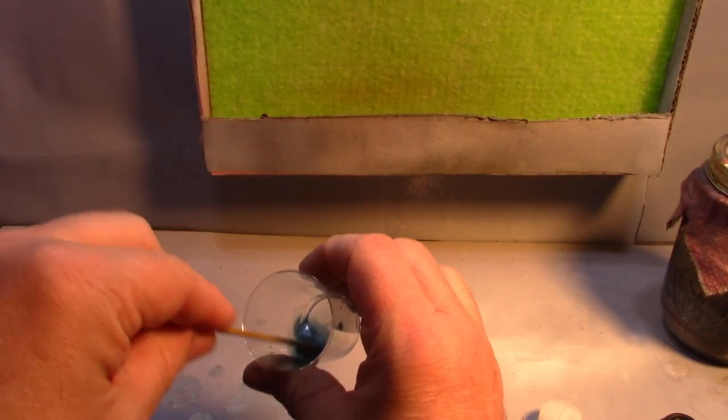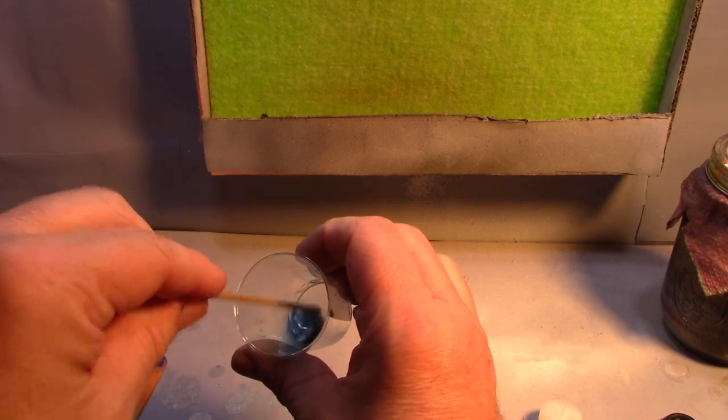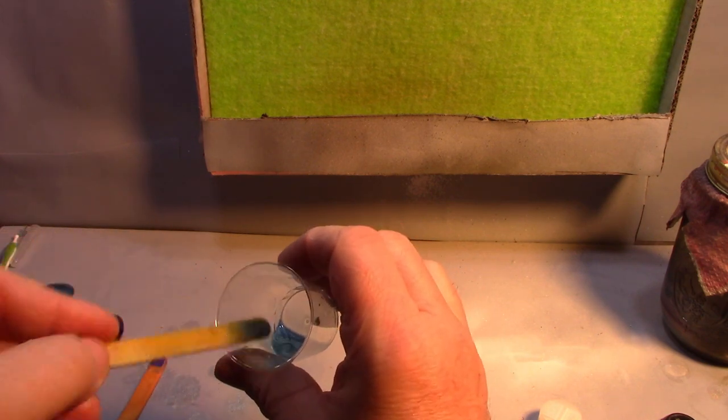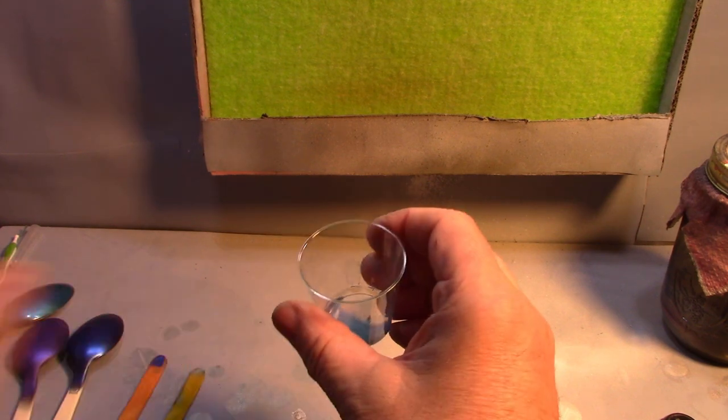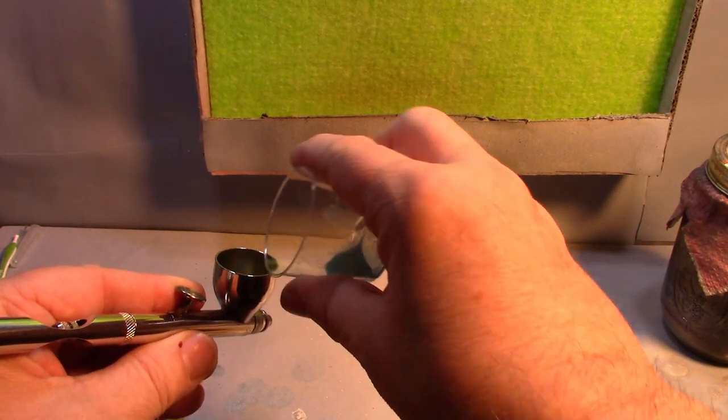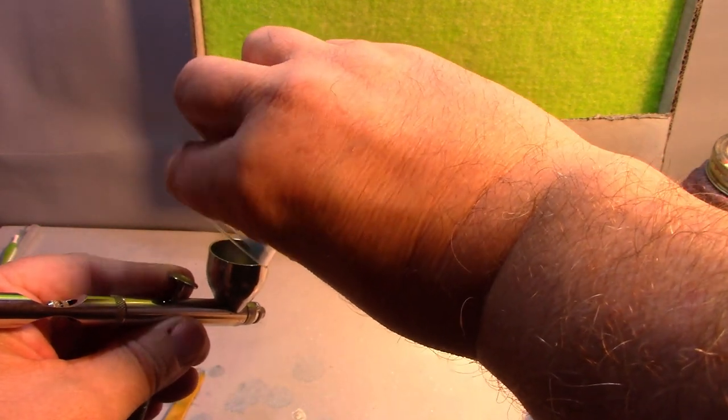Okay, so remember, equal parts of your gloss coat and your thinner. Let's see what this sky blue looks like.